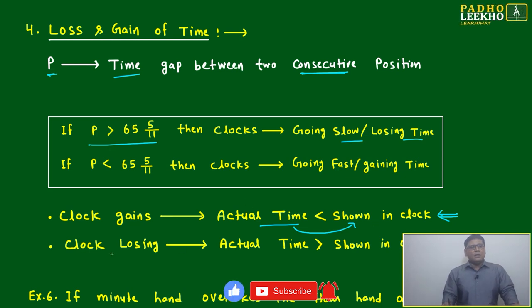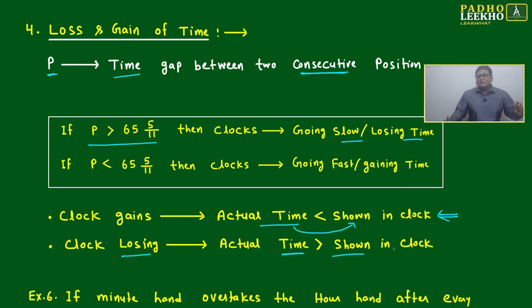If the clock is losing time, then actual time will always be more than shown. Whatever the clock shows, just suppose 5 hours 30 minutes, and it is slow, the actual time may be 5 hours 32 minutes or 5 hours 33 minutes. Then if the clock is losing, actual time will be more than shown in the clock. If the clock is gaining time, actual time will be less than shown.